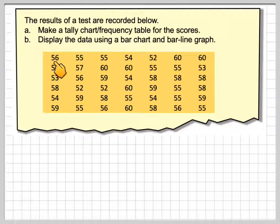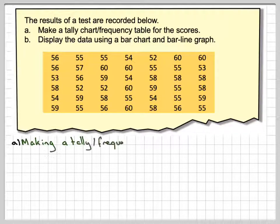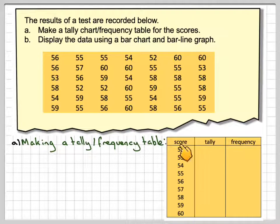So the first student got 56, the second got 55, etc. And what we need to do, we need to order it in some way. The easiest way to do it is to make what's known as a tally chart. So if we make a tally frequency table, we put the scores here. The scores go from 52, which is the lowest, up to the highest, which is 60. You will need to determine that from looking at the table. Here we'll do the tally and here we'll do the frequency.